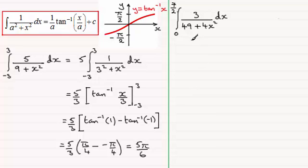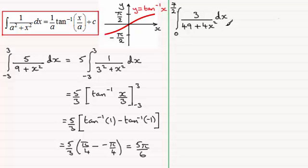For the second example, we've got the integral of 3 divided by 49 plus 4x squared, integrated with respect to x, going between x equals 0 and x equals 7 over 2. If you'd like to have a go at this one, pause the video now. When you come back, either fast forward to check your solution, or I'll take you slowly through the worked solution.